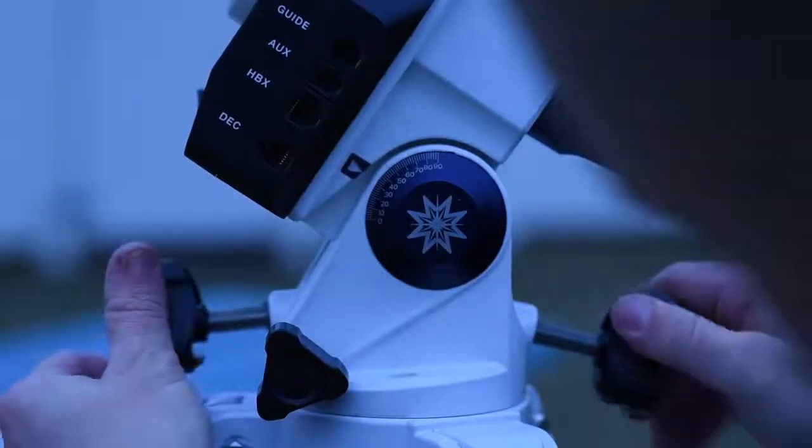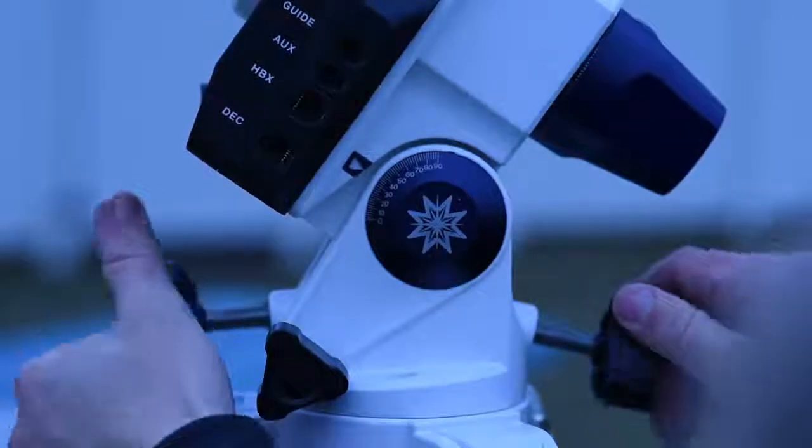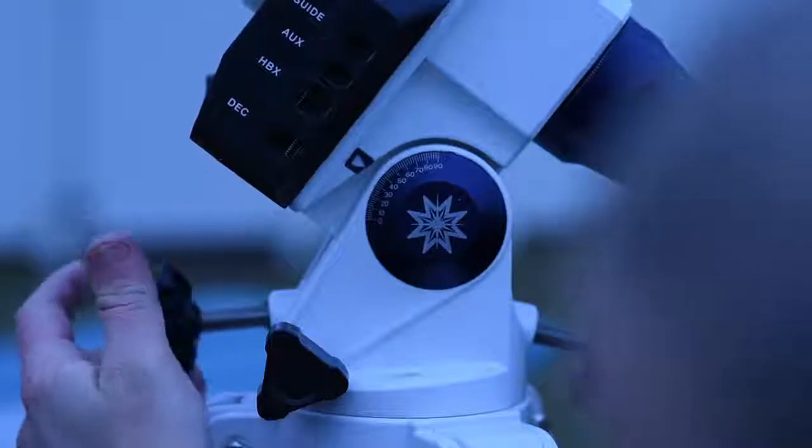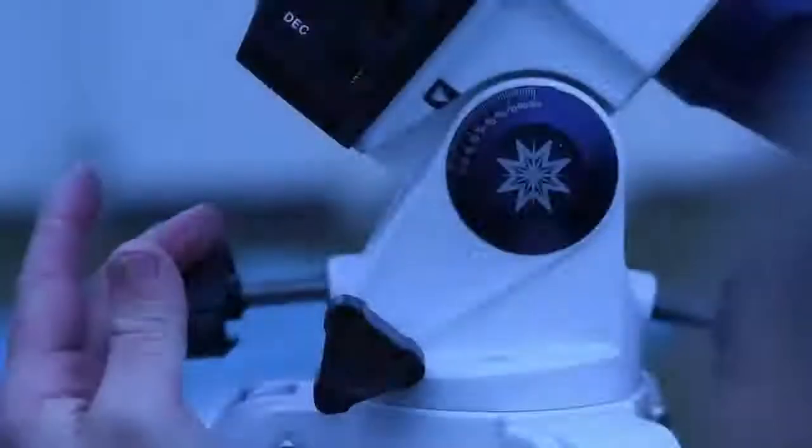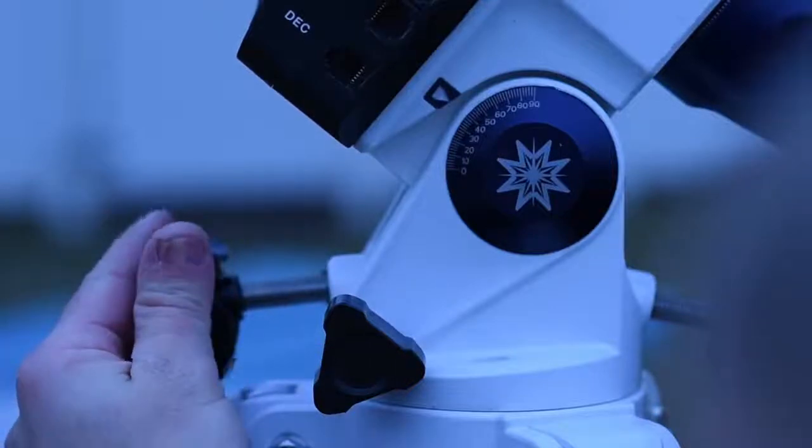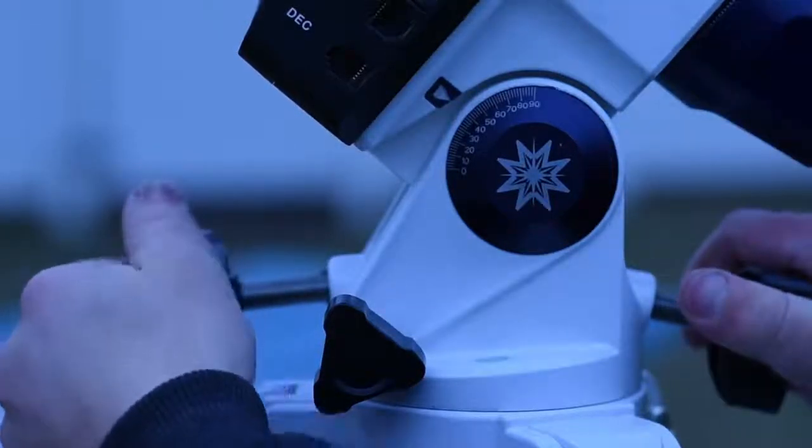We suggest roughly setting the latitude on the mount before more weight is added. This makes the latitude adjustments easier. Adjust the latitude knob so the latitude scale on the mount reads your observing location latitude. Loosen the front altitude lock knob a few times to allow room for adjustment.